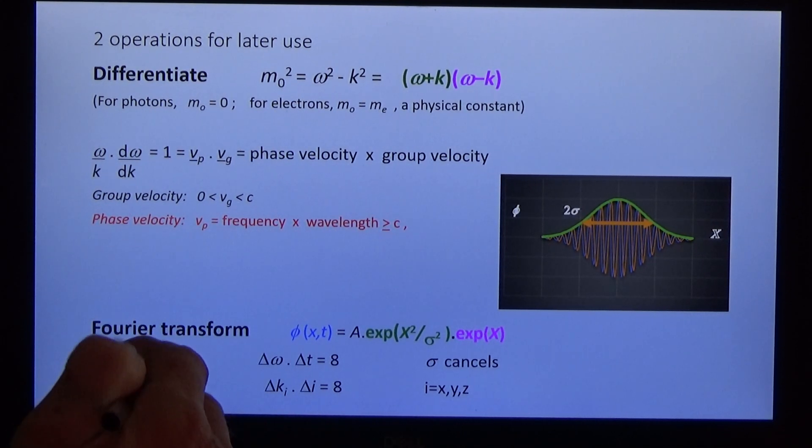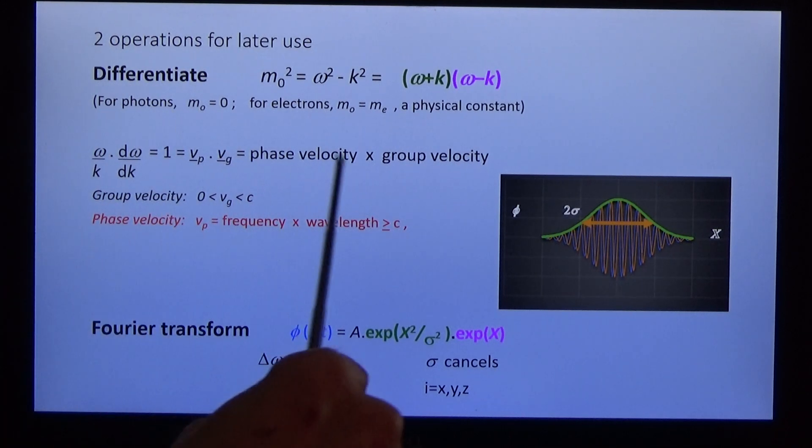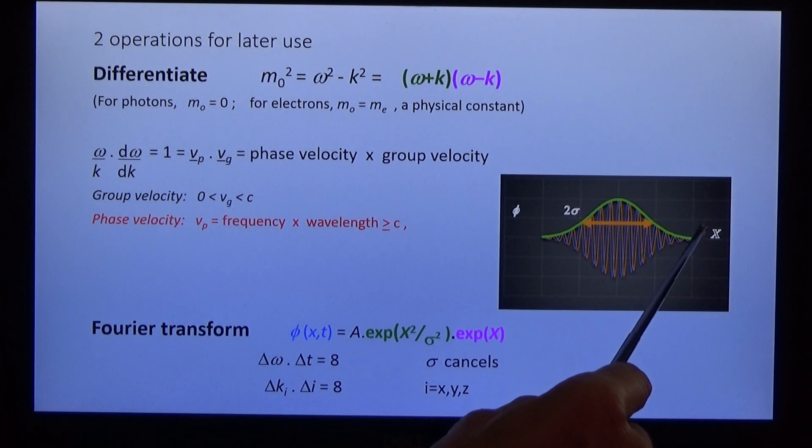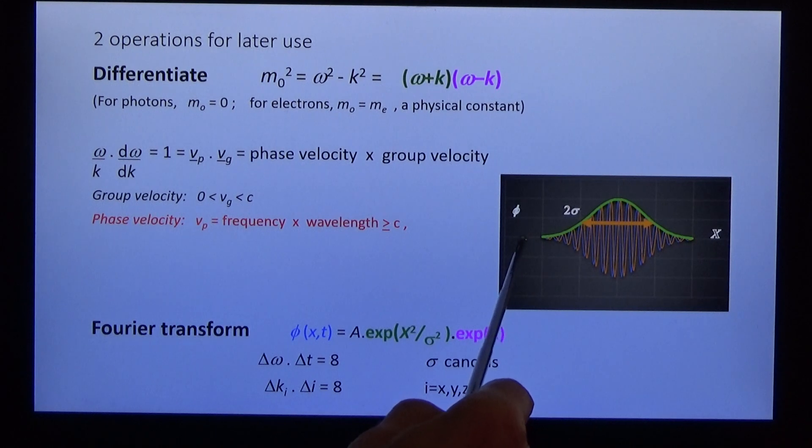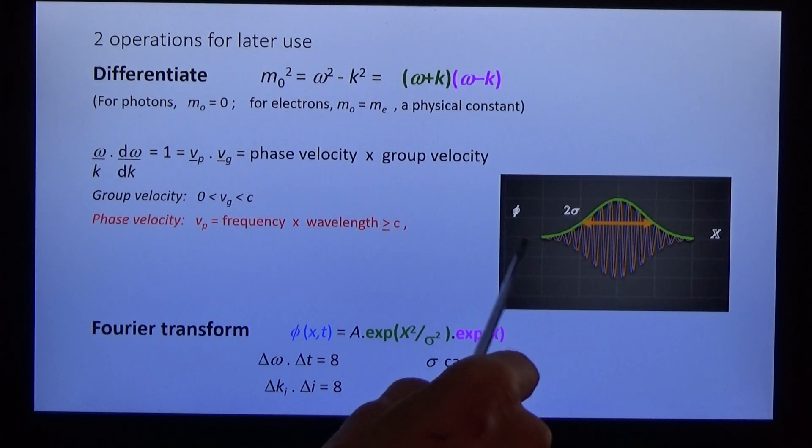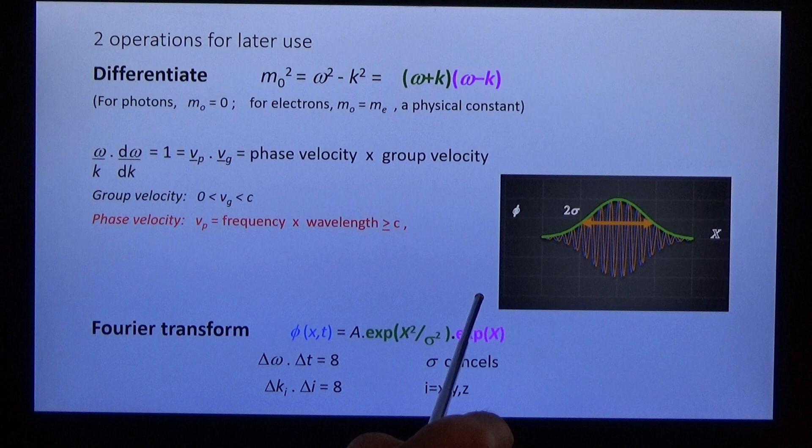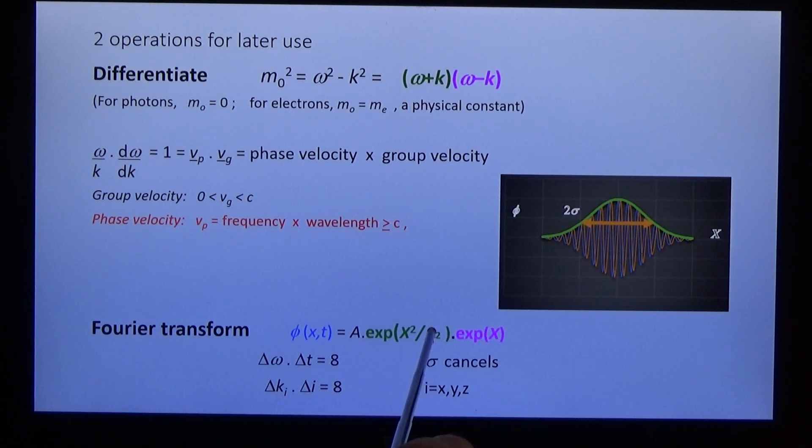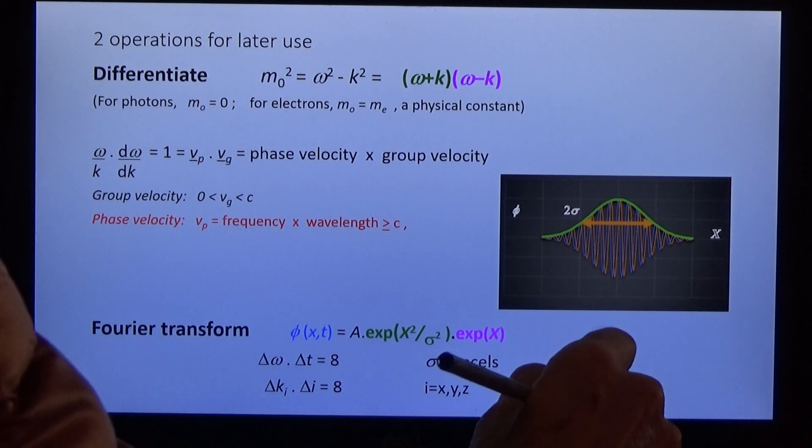The Fourier transform depends on the fact that the Fourier transform of a Gaussian is Gaussian. When we multiply the Fourier transform with the original wave, we find that sigma cancels and dω by dt is equal to 8, dk by dx is equal to 8. These values are an order of magnitude greater than Heisenberg's limit.